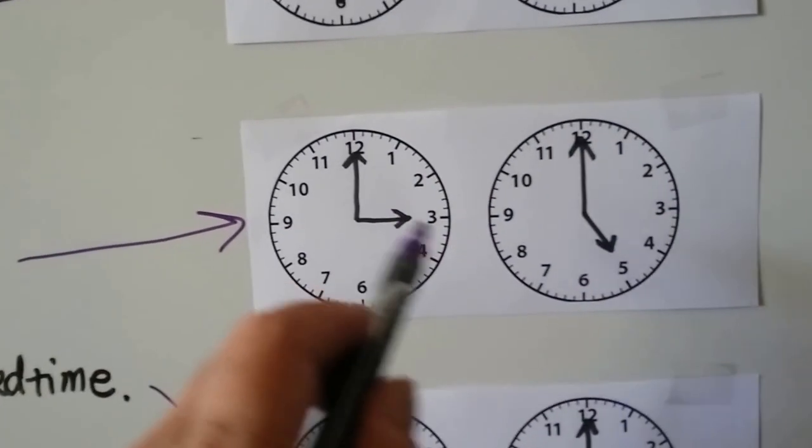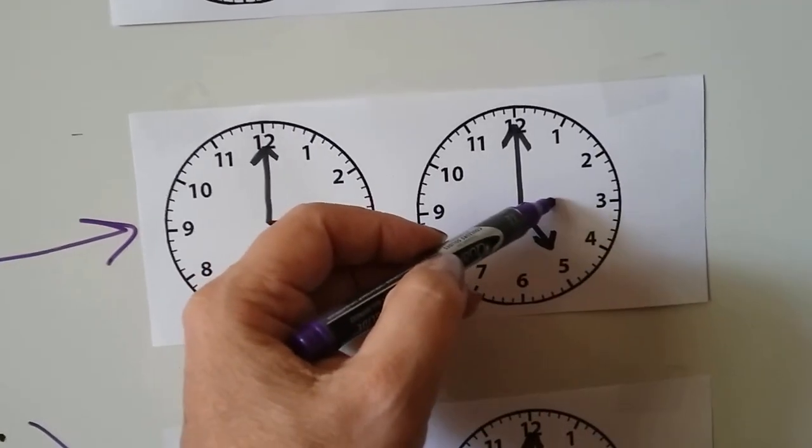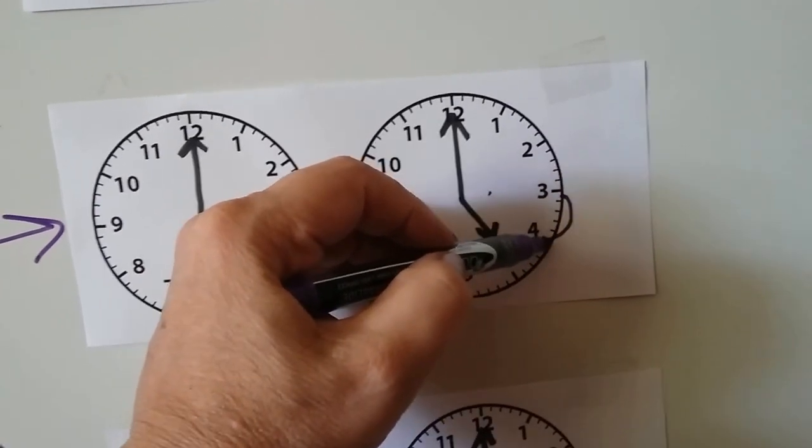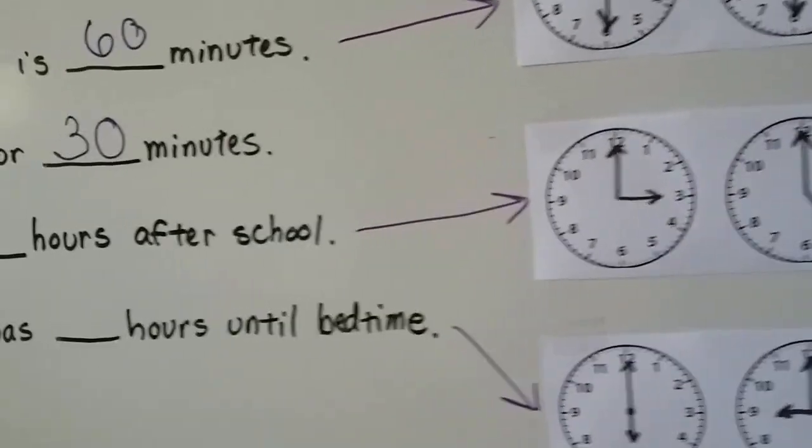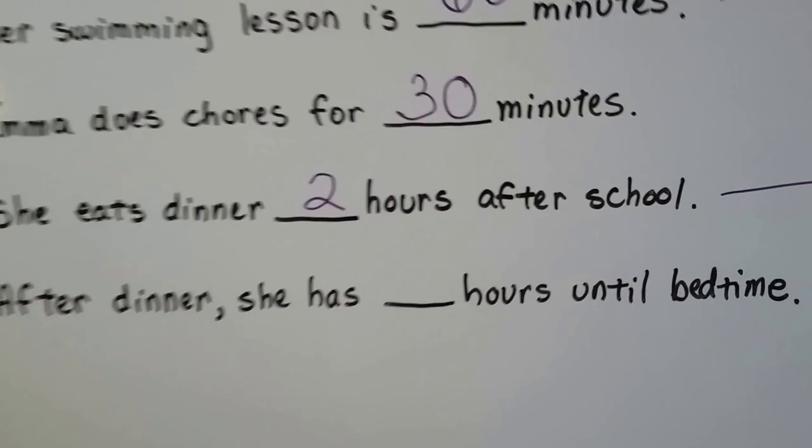She gets out of school at 3 o'clock, she eats dinner at 5 o'clock. So if the hour hand was pointing to the 3 like this, we would count hops: 1 hour, 2 hours. From 3 o'clock to 5 o'clock is 2 hours. So she eats dinner 2 hours after school.